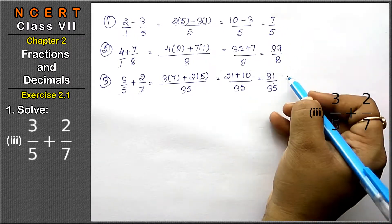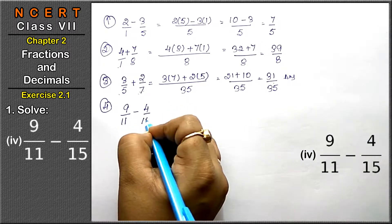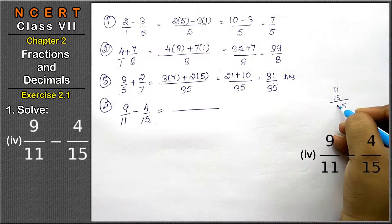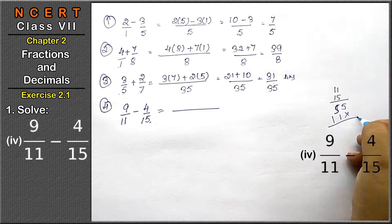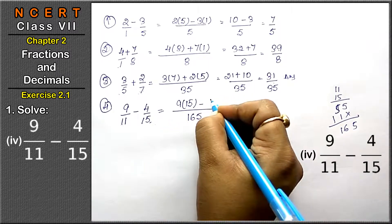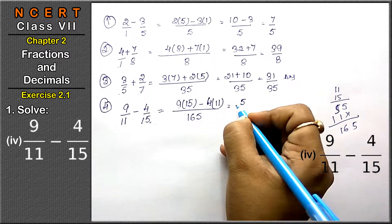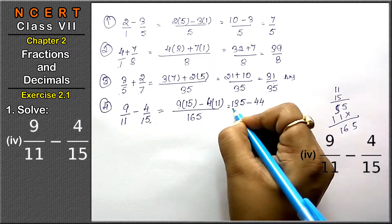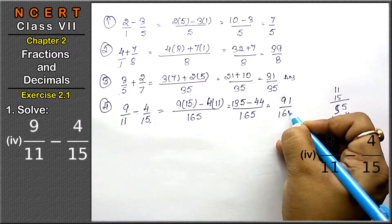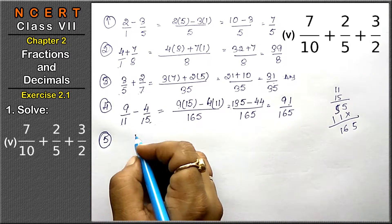The fourth part is 9 upon 11 minus 4 upon 15. Both are unlike fractions. The LCM of 11 and 15 is 165. Multiply 9 by 15 and 4 by 11: that gives 135 minus 44 upon 165, which equals 91 upon 165. Let's check if it can be reduced — it cannot, so 91 upon 165 is the answer.